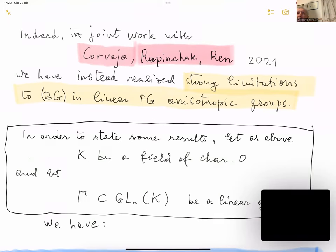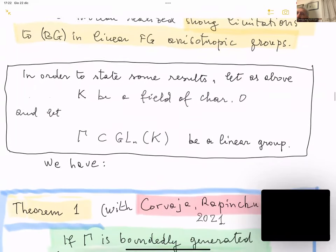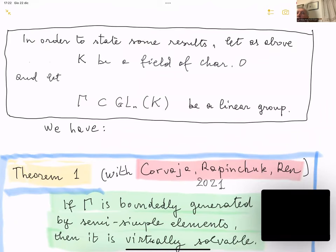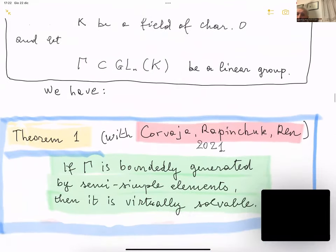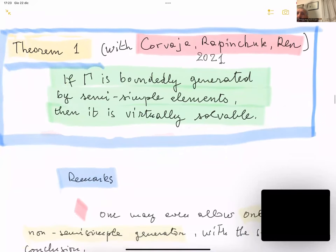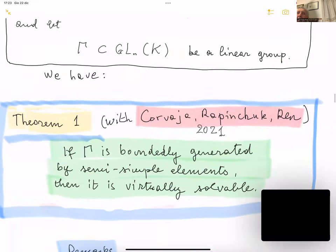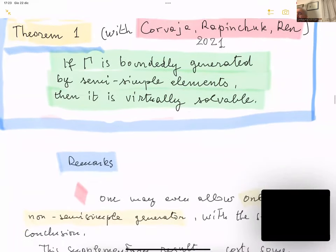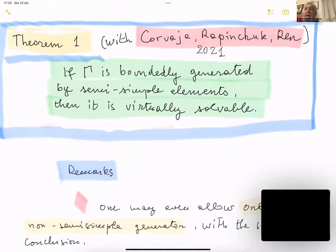Studying this problem with Corvaja, Rapinchuk, and Zannier in 2021, we found strong limitations to bounded generation in finitely generated linear anisotropic groups. Let me fix some notation: k is any field of characteristic zero and Γ ⊂ GL(m,k) is a linear group. We have this theorem: if Γ is boundedly generated by semi-simple elements — it need not be anisotropic — then it is virtually solvable, i.e., it has a solvable subgroup of finite index.